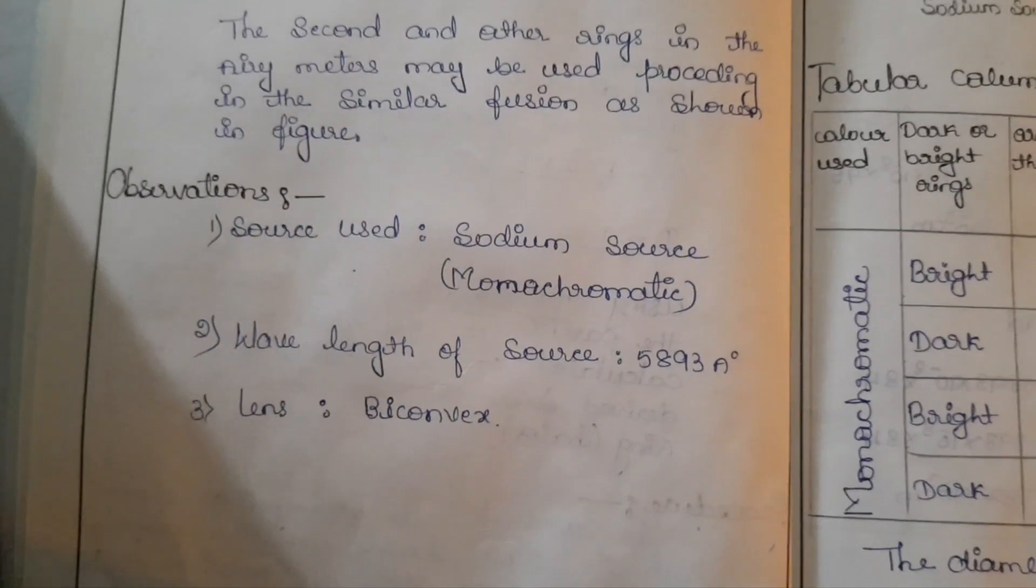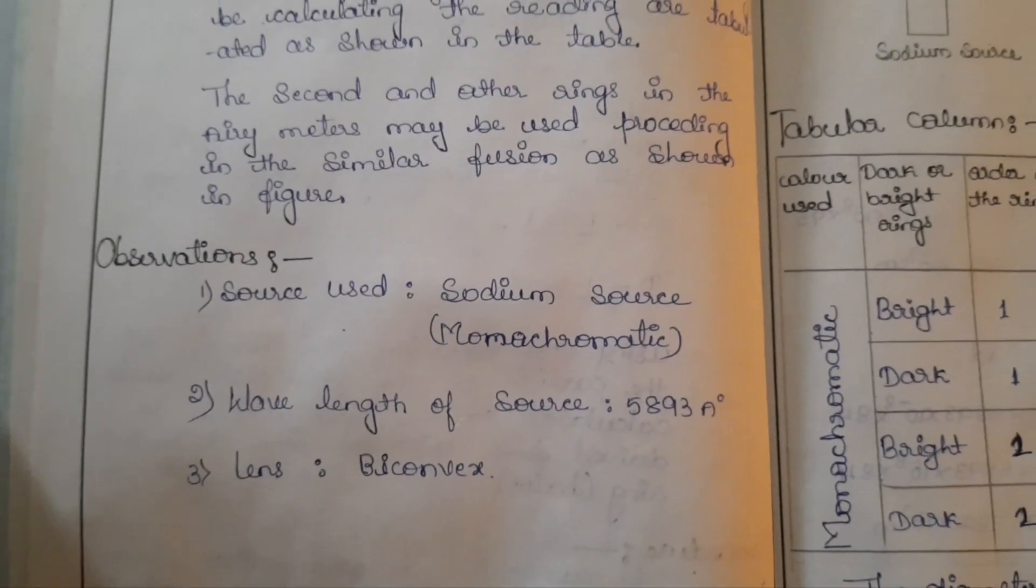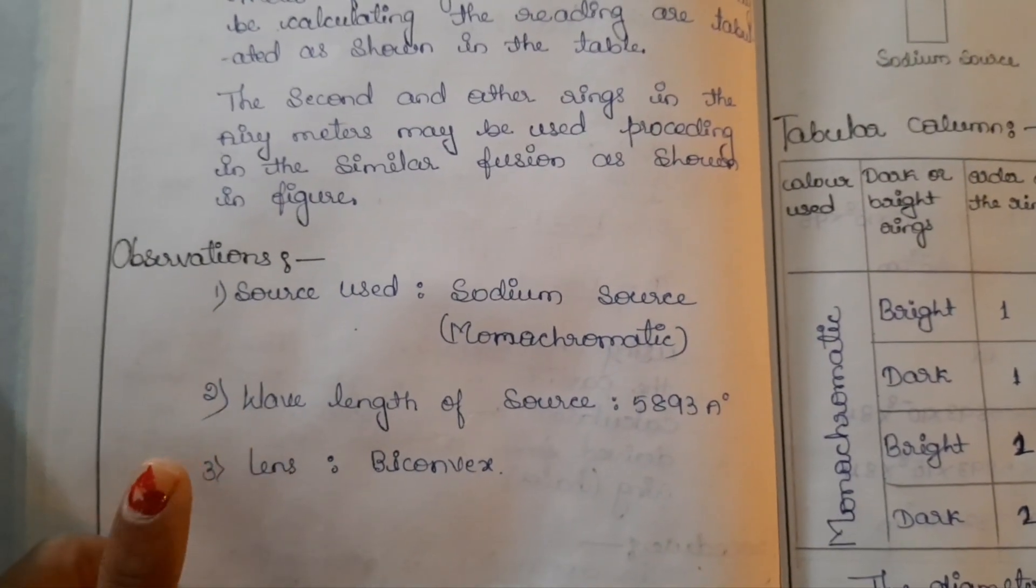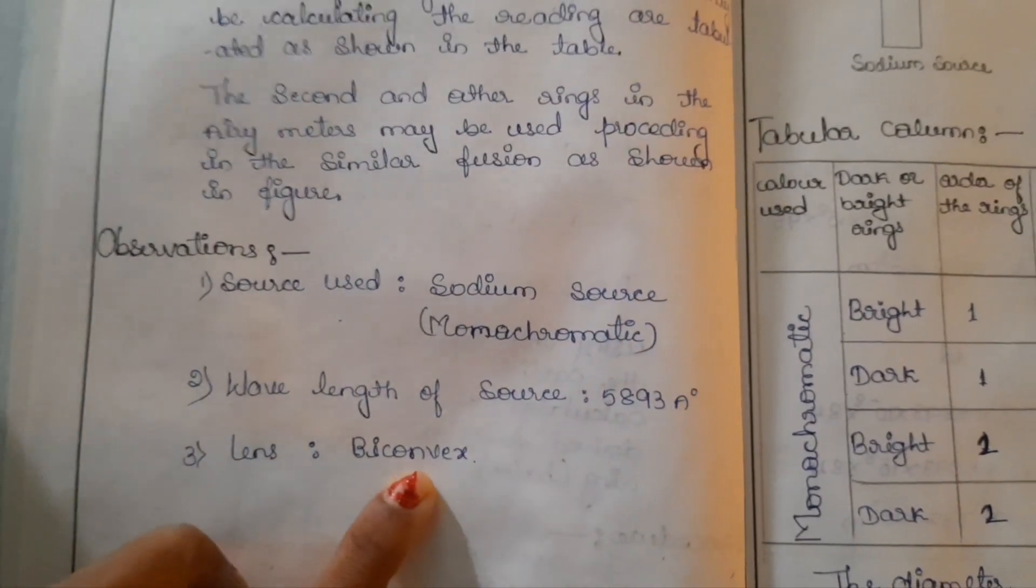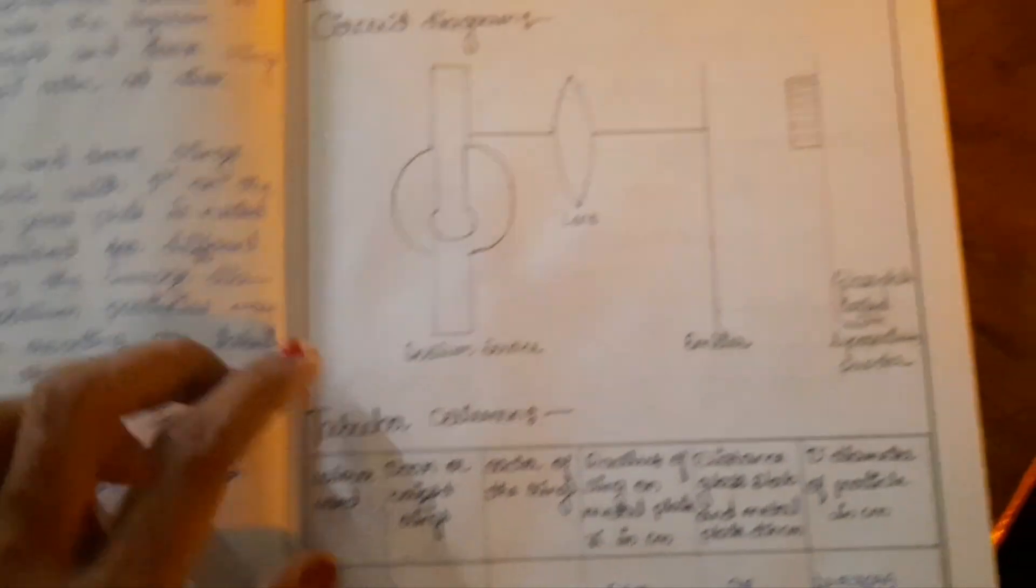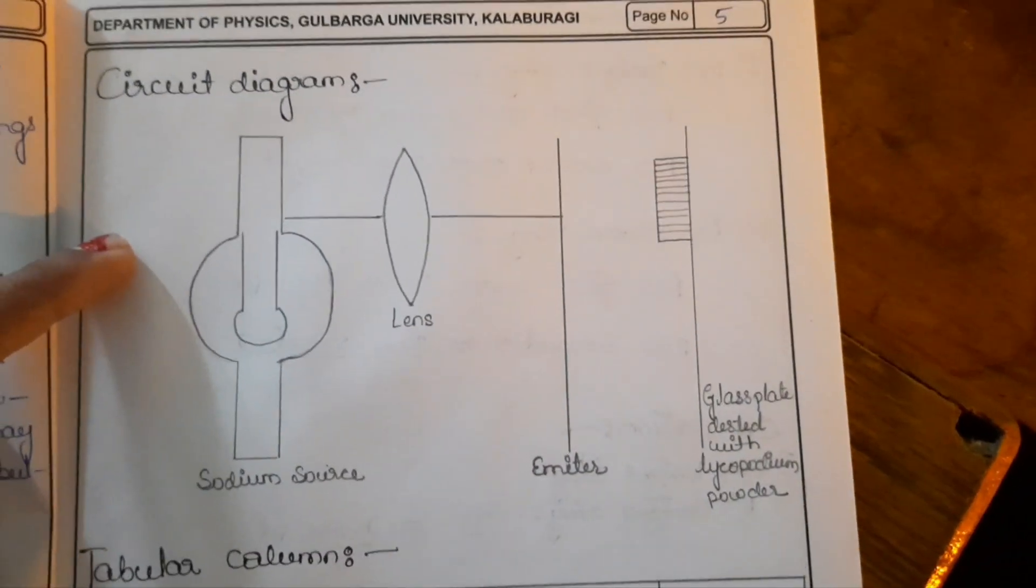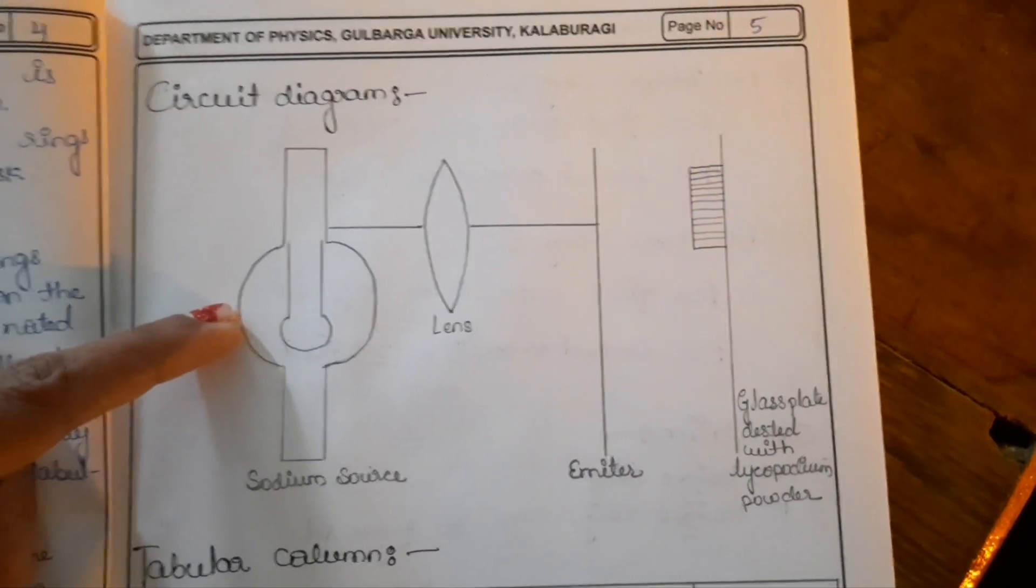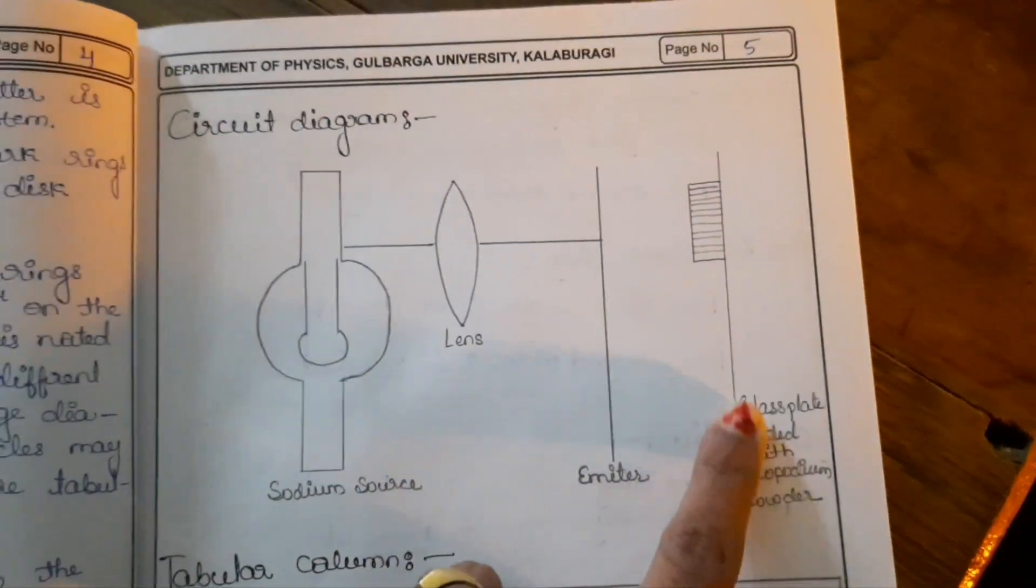So the procedure of taking the readings I will explain to you. Before that, you should write down the observations: source used is sodium source, wavelength of source 5893 angstrom, that is the sodium source wavelength, monochromatic color is yellow, and the lens used here is biconvex. This is the experimental arrangement.